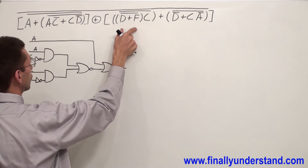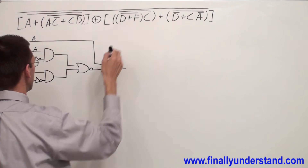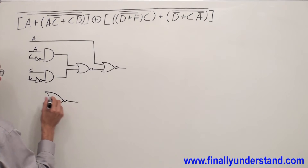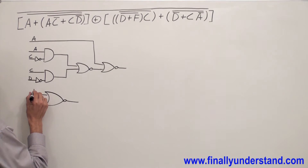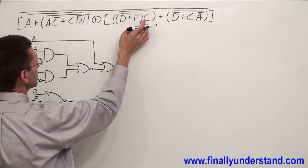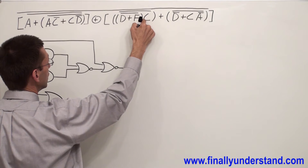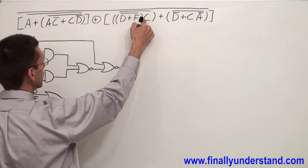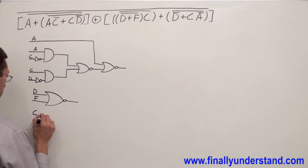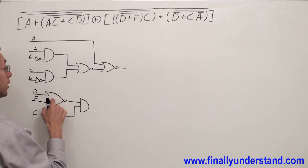Now I'm going to go to the second part, starting from this parenthesis. This is NOR with F, so I'm going to draw a NOR gate with two inputs D and F. This NOR gate is NANDed with C — because I have a bar over this multiplication, which means NAND — so I connect C together with my NOR gate through a NAND gate.